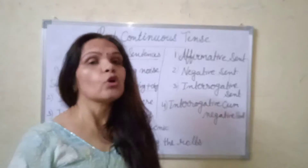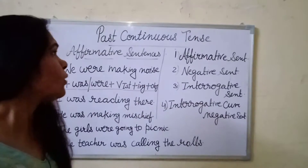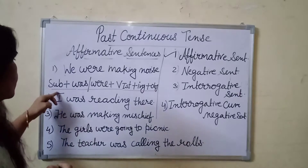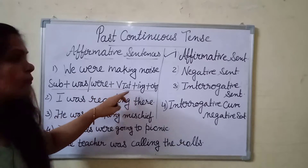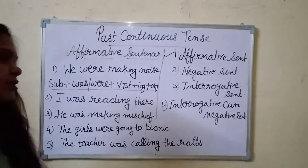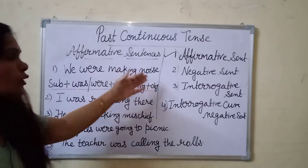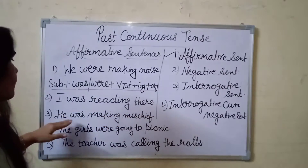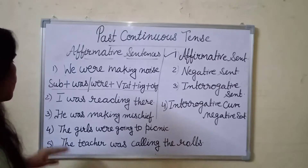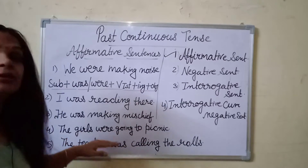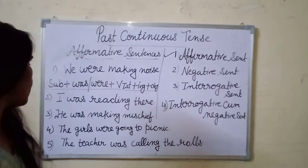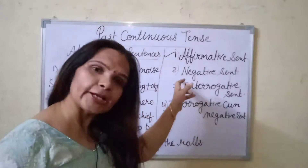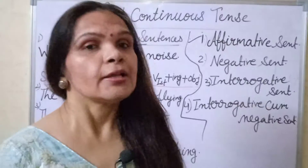Now we will talk about affirmative sentences. The structure is: Subject + was/were + verb's first form + ing + object. For example: We were making noise. I was reading there. He was making mischief. The girls were going to picnic. The teacher was calling the rolls.